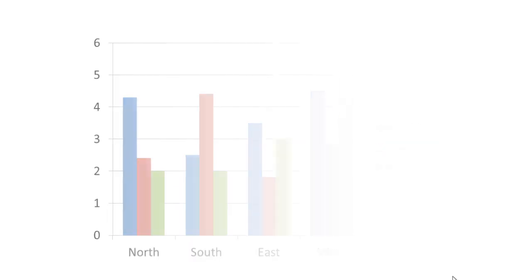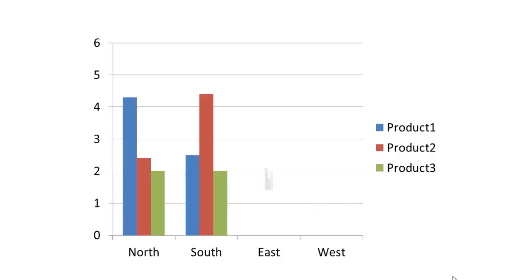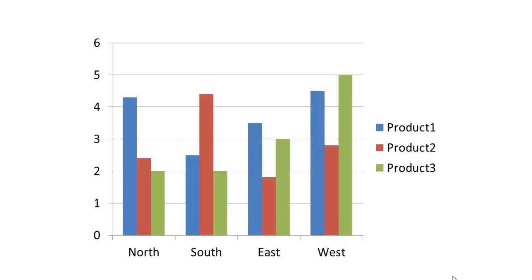So in this example, we're going to have the categories North, South, East, West come up each individually. These are part of the chart elements that you can actually animate separately, outside of just animating the whole chart. And I'll show you how to do that.